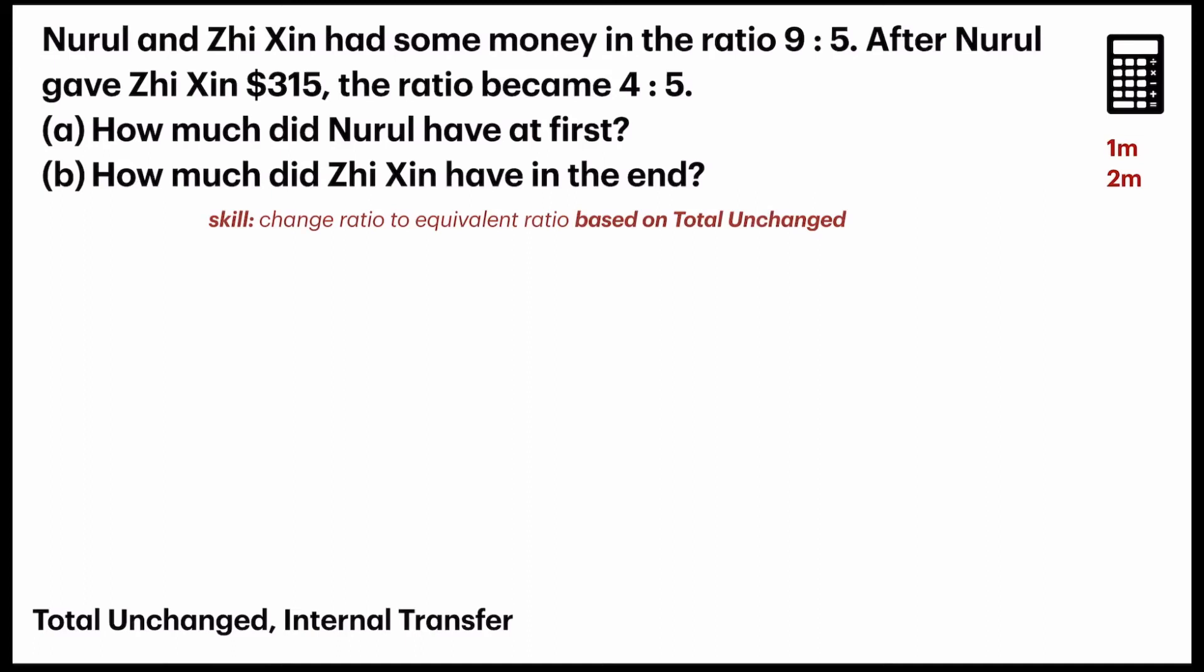Nuru and Jixing had some money in the ratio of 9 to 5. After Nuru gave Jixing $315. The moment I see this, I know it is an internal transfer and I have to apply the total unchanged concept inside. And I know the ratio of the money that Nuru and Jixing had became 4 is to 5.